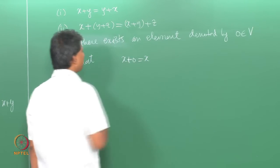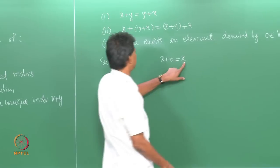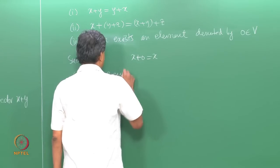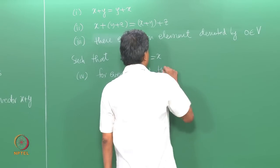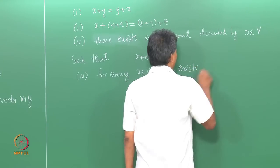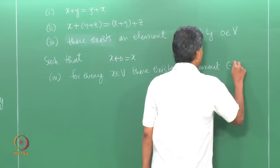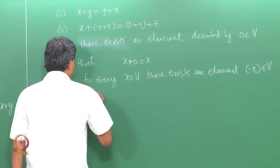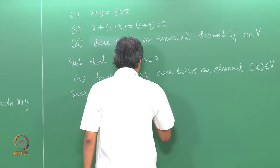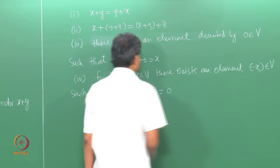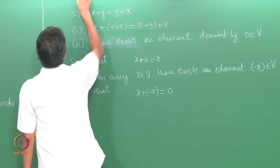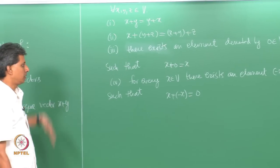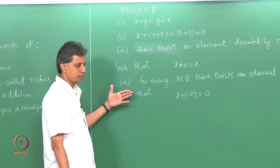All these conditions hold for all x, y, z in V. The fourth condition is: for every x in V there exists an element denoted −x in V — the additive inverse — such that x + (−x) = 0, the additive identity. These four conditions must be satisfied with respect to vector addition.